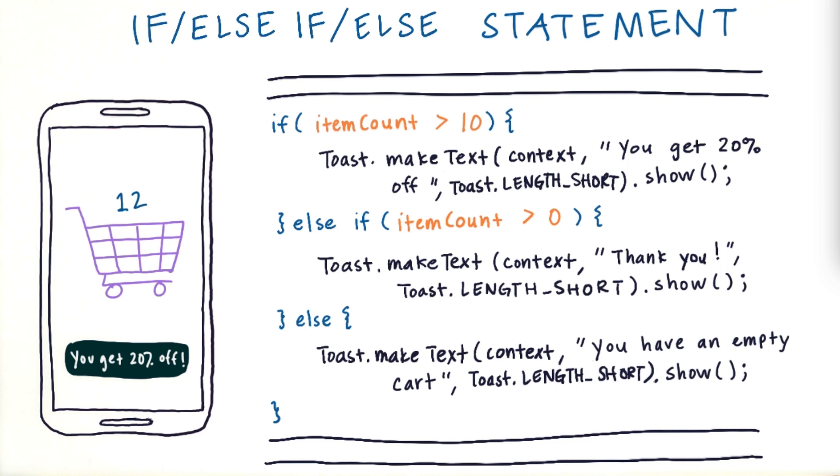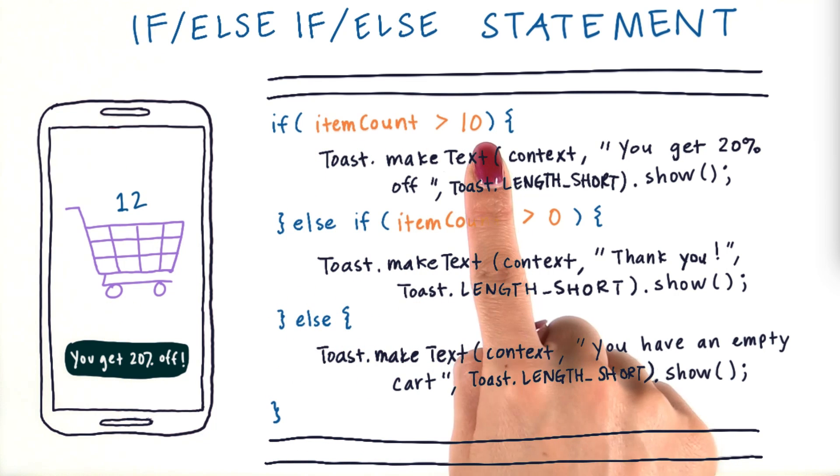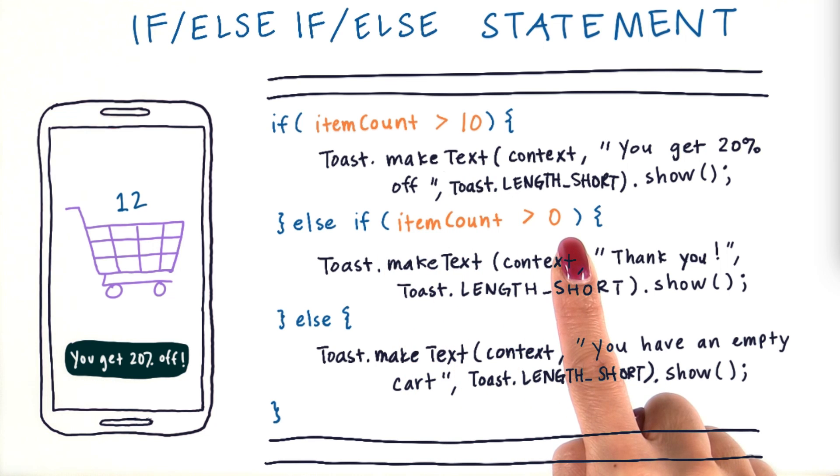And lastly, if our shopping cart had zero items, then this condition would be false, because zero is not greater than 10. This condition would be false, because zero is not greater than zero. And then we would fall into this else case here, and we would show a message that says, you have an empty cart.